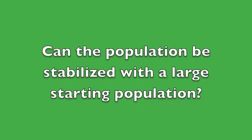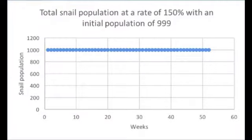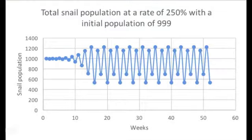Can the population be stabilized by starting with an initial population very near the carrying capacity? In the first graph, when the rate of growth is at 150% and the initial population is 999, the carrying capacity is reached just after two years.